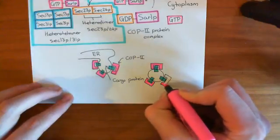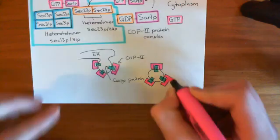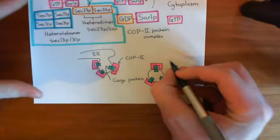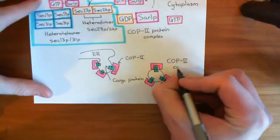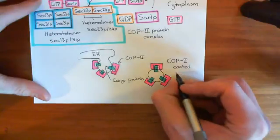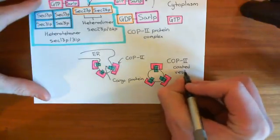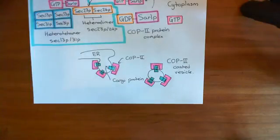And this is now destined for the cis-Golgi, basically, the membrane of the cis-Golgi. So this whole thing is a COP-2 coated vesicle. And we'll continue our discussion where we see how this is going to make its way to the cis-Golgi, and also then how it's actually going to fuse with the membrane of the cis-Golgi later.